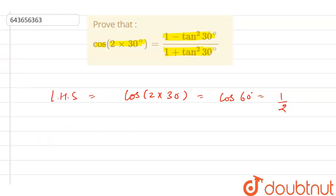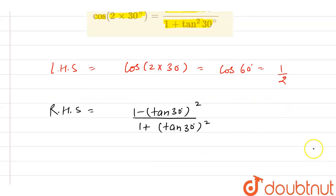Now let's also solve the RHS. Here at RHS we have 1 minus tan²(30°) divided by 1 plus tan²(30°).